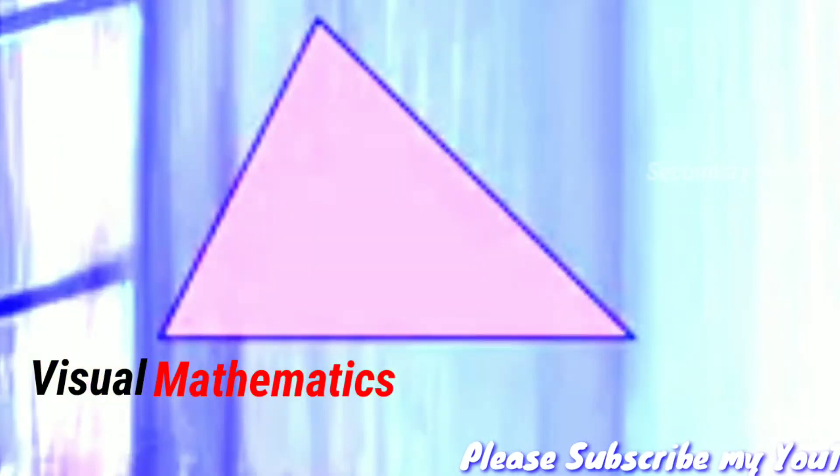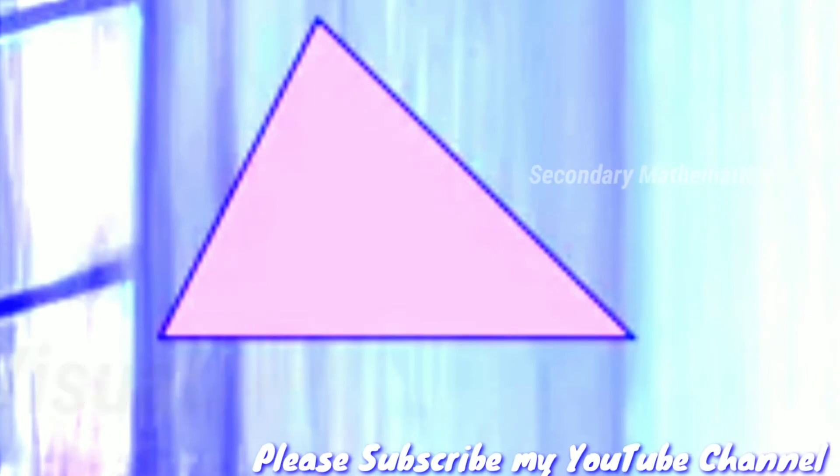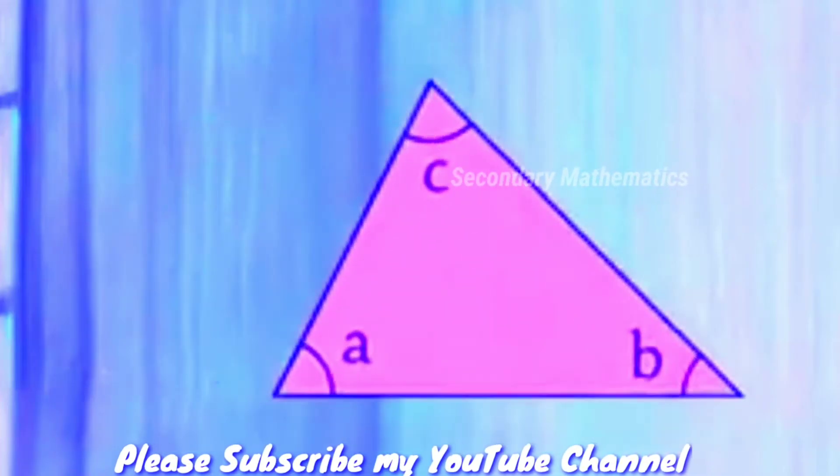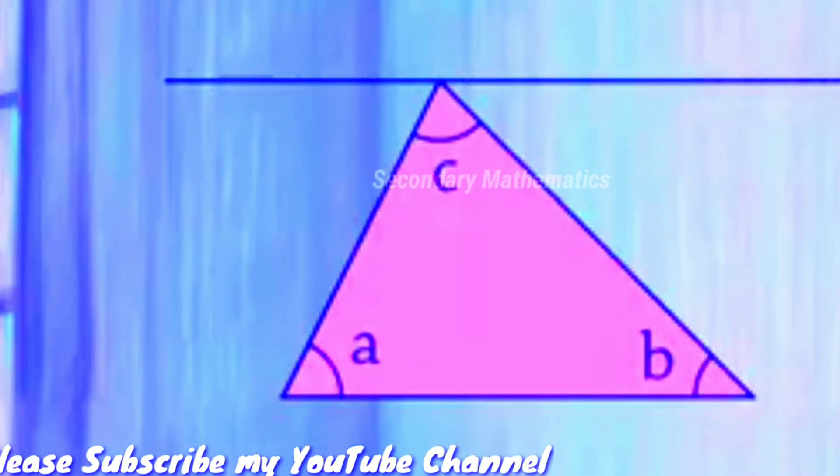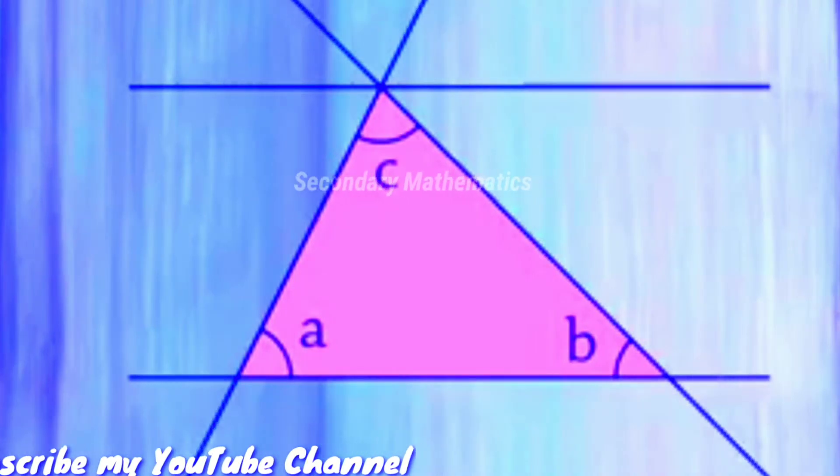The sum of three angles of any triangle is 180 degrees. To see this, first let us label angle A, angle B, and angle C. Draw a line to the top vertex parallel with the base, then extend the sides of the triangle.